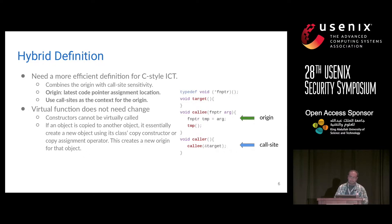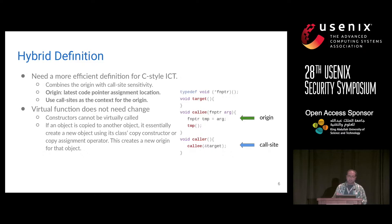We decide to modify the definition of origin for the C-style code pointer. For the virtual function call, it is fine — we don't need to worry about that one. For the C-style code pointer, we decide the origin will be the most recent assignment operation of the code pointer, and we will replace the intermediate statements using the call sites of this origin. So here, we only have origin and origin context, and we can identify the target for that indirect call inside the callee.